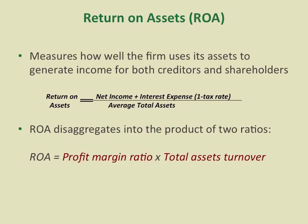Talking about analysis, a very interesting type we can do is ROA analysis. ROA stands for return on assets. It equals net income plus after-tax interest expenses, divided by average total assets. This ratio measures how well the company uses its assets to generate income for both creditors and shareholders — net income goes to shareholders, and interest expenses represent the return to creditors.